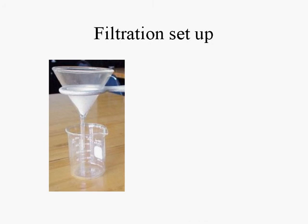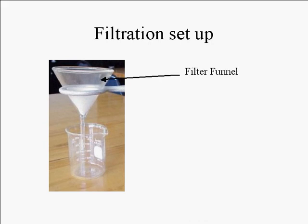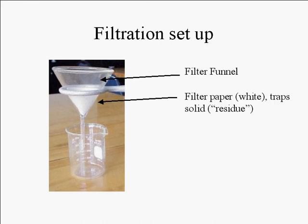Here's a typical laboratory setup for filtration. A funnel is mounted on a ring stand. A piece of filter paper is folded to fit into the funnel. The mixture to be separated is poured into the funnel. The paper traps the solid, which is called the residue.